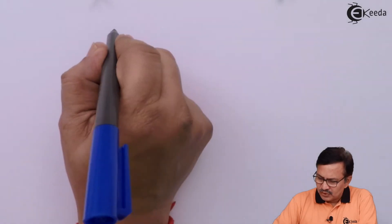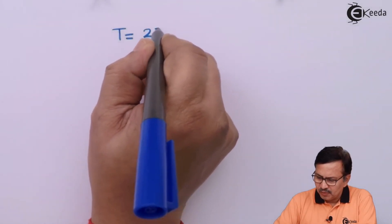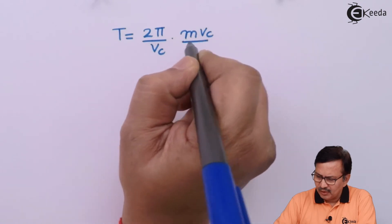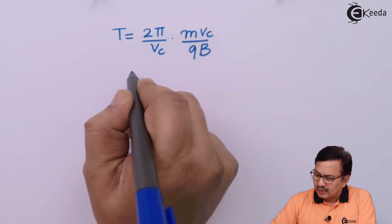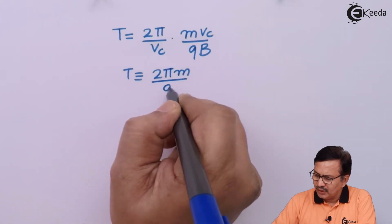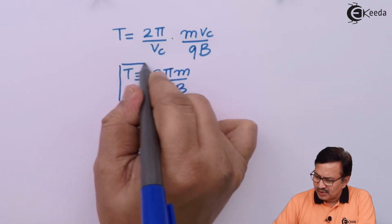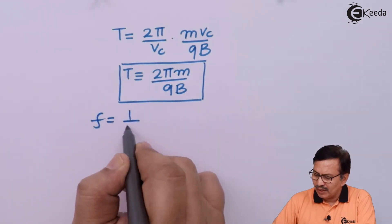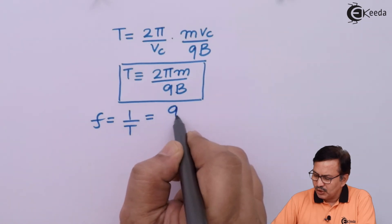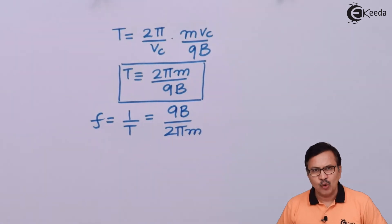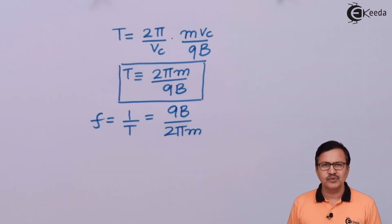The time period T = 2πR / Vc = (2π / Vc) × (M·Vc / QB), which simplifies to T = 2πM / QB. The expression for frequency is f = 1/T = QB / (2πM). So we have obtained the expressions for both the time period and the frequency.